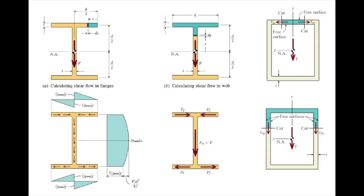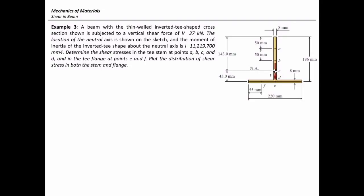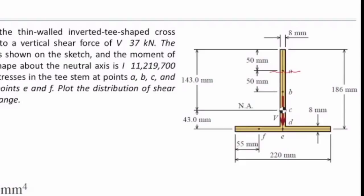When you are talking about horizontal shear stress, it is developed in the horizontal element. To determine shear stress at point A, I need to cut my element from that point and calculate Q for all area above that. The thickness would be 8 millimeters. V and I are constant — the shear force and moment of inertia are always constant for a certain section. The only thing that changes is Q.